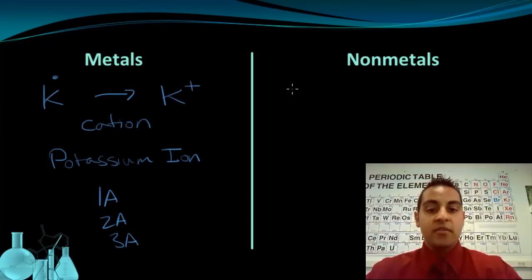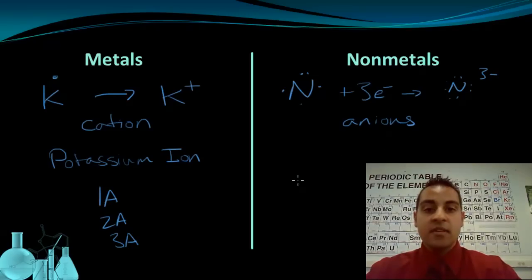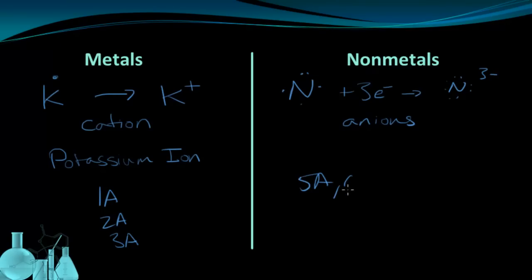If we look at some non-metals, however, such as nitrogen, nitrogen has five valence electrons. So nitrogen is going to want to gain electrons to reach a noble gas configuration. If it can pick up an extra three electrons, it can then have a full octet and have a minus 3 charge. This behavior of gaining electrons to form anions is very common for elements in group 5A, 6A, and 7A. Elements in these groups will gain electrons to form anions.